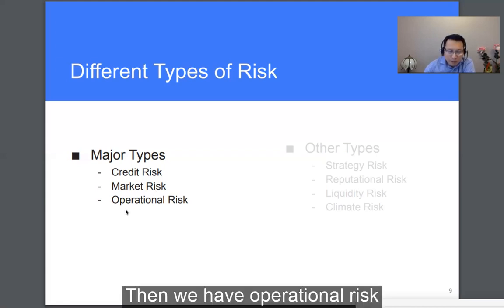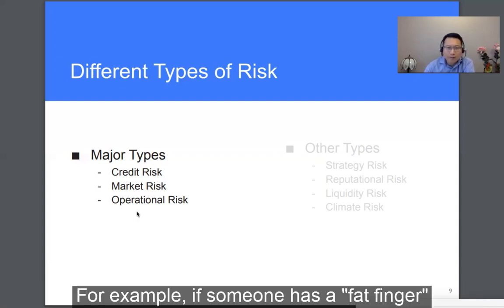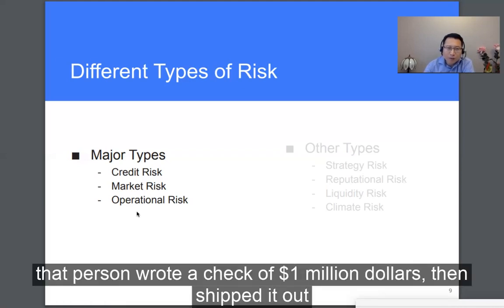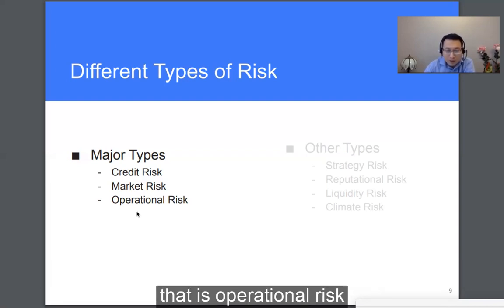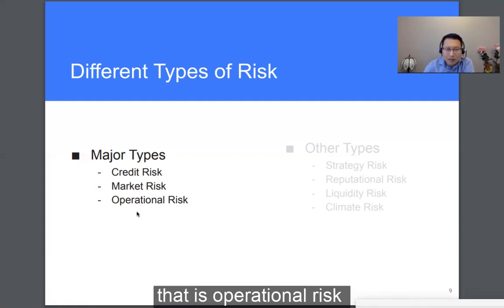Then we have operational risk. This refers to any potential loss resulting from a breakdown of internal procedure, people, or system. For example, if someone has a fat finger — you're supposed to pay out $10,000, but that person writes a check for $1 million and ships it out — that's operational risk. Or when the system of a bank goes down and the customer cannot access their funds for three days — that's also operational risk.